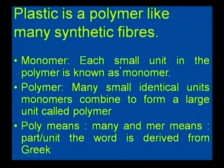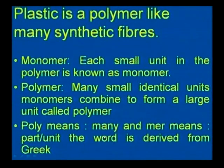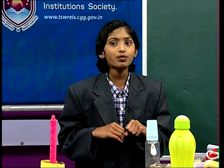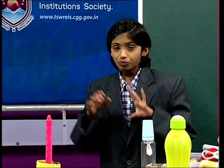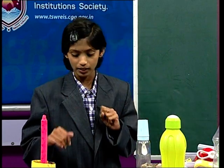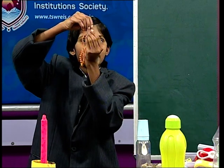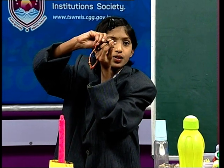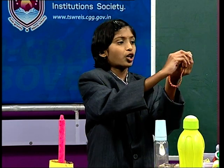Plastic is a polymer like many synthetic fibers. Each small unit in the polymer is known as a monomer. Many small identical units — monomers — combine to form a large unit called a polymer. Poly means many, and mer means unit. So polymer means many units.